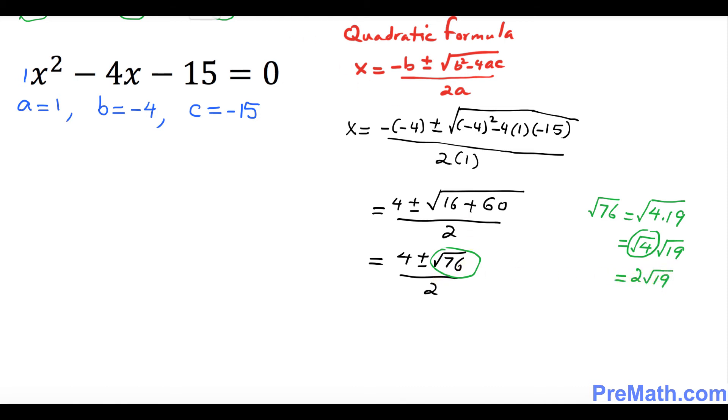So I can replace this square root of 76 as 4 plus minus 2 square root of 19, and here I can put 2, I can split it up as well.